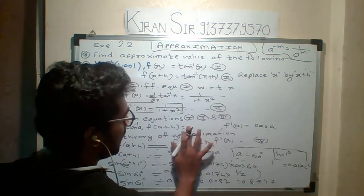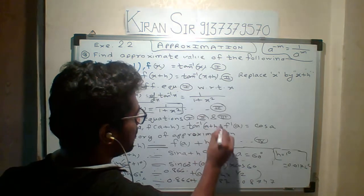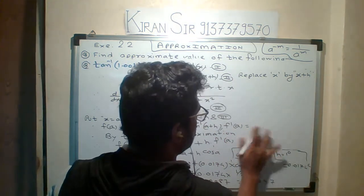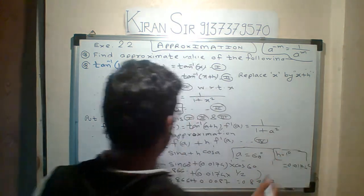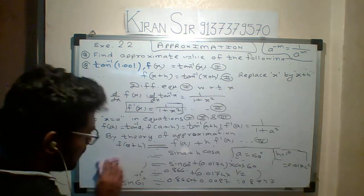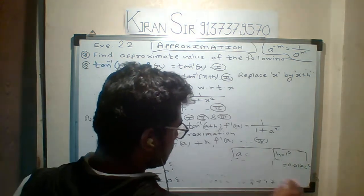Then what will you get? Tan inverse of a plus h. And what is here? 1 upon 1 plus a squared. Let's keep in mind your functions are different here. I am replacing the particular function by the particular.